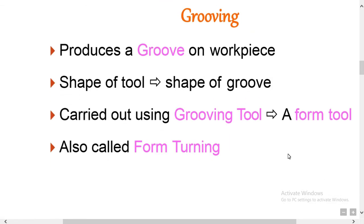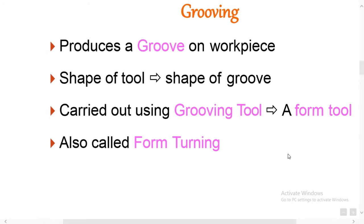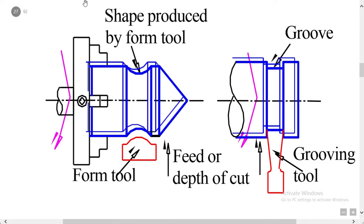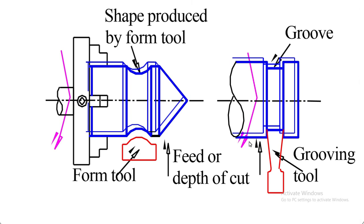To produce a groove on the workpiece using a tool shaped as the groove required — this is called grooving, also known as form turning. Grooving means convex shapes and semi-circular shapes are produced on the workpiece using a groove form tool. Grooving means reducing the in-between depth or width — that is called a groove. Grooving is also called forming — concave and convex, taper, or any irregular shapes made on the workpiece by using a form tool. The cutting edge of the tool is of the required form.